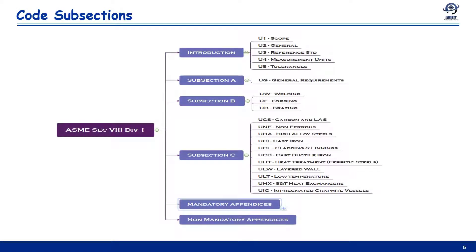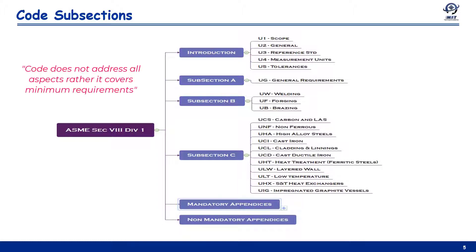ASME BPVC Section 8 Division 1 contains mandatory requirements, specific prohibitions, and non-mandatory guidance for pressure vessel materials, design, fabrication, examination, testing, certification, and pressure relief systems. It is important to note that the code does not address all aspects of these activities.